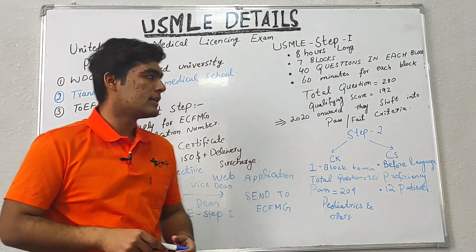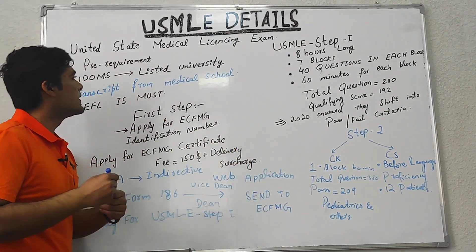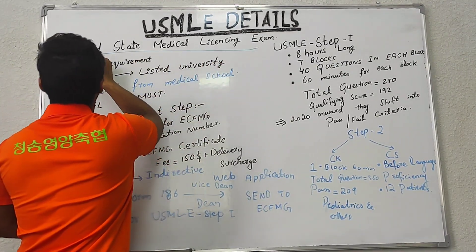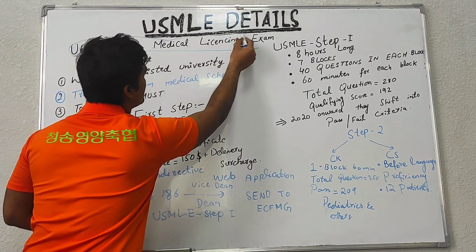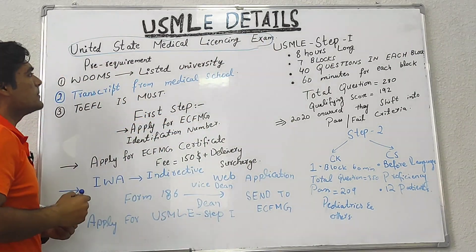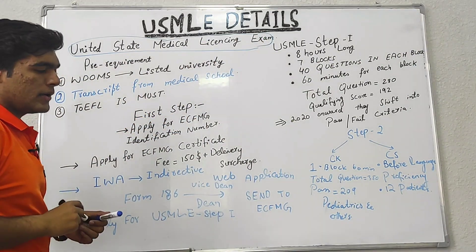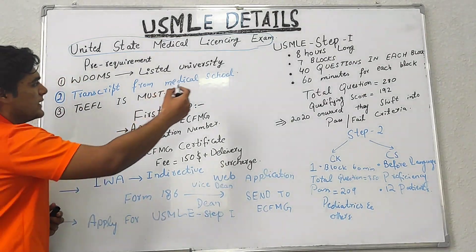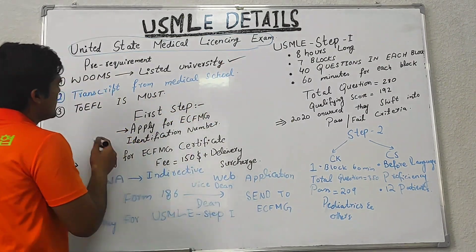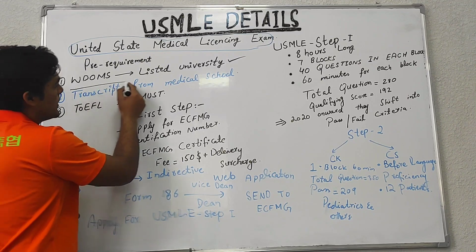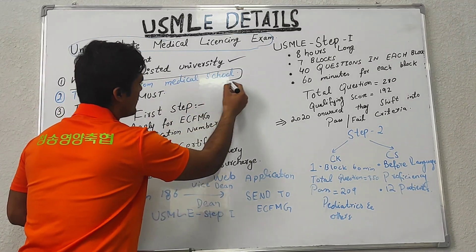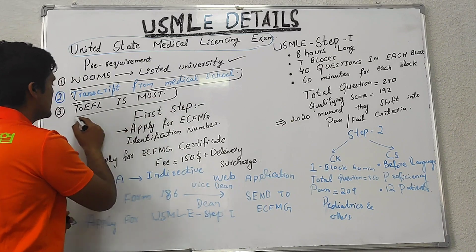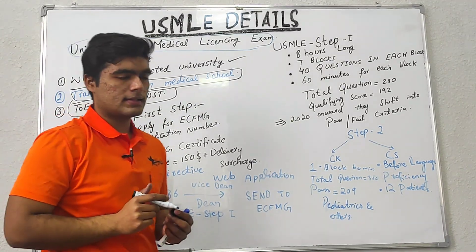In USMLE — the United States Medical Licensing Exam — we have some pre-requirements. Your university must be listed in the World Directory of Medical Schools, you have to get a transcript from that medical school, and you have to pass the TOEFL test, which is an English proficiency test.